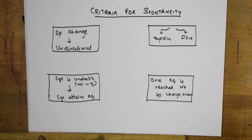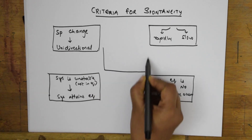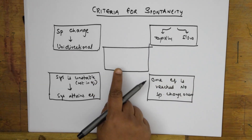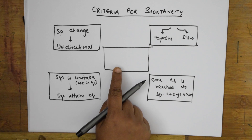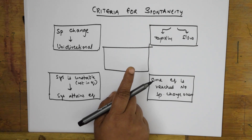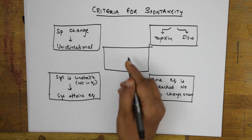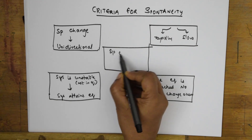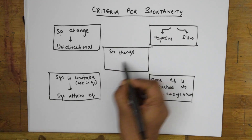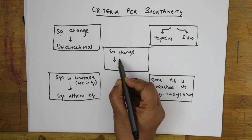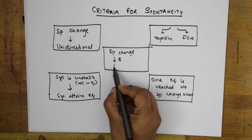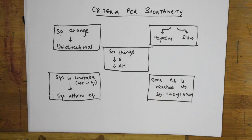Last but not the least — and one of the most important criteria — whenever a spontaneous change occurs in a system, there is a decrease in internal energy or enthalpy. So either there is a decrease in internal energy, denoted by E, or there is a decrease in enthalpy, that is delta H. Remember this as a criteria for spontaneity.